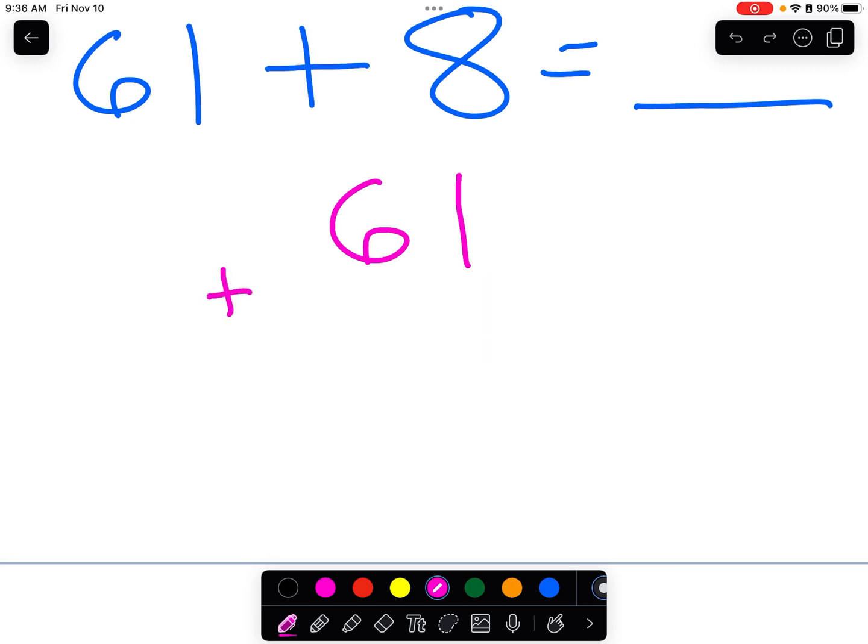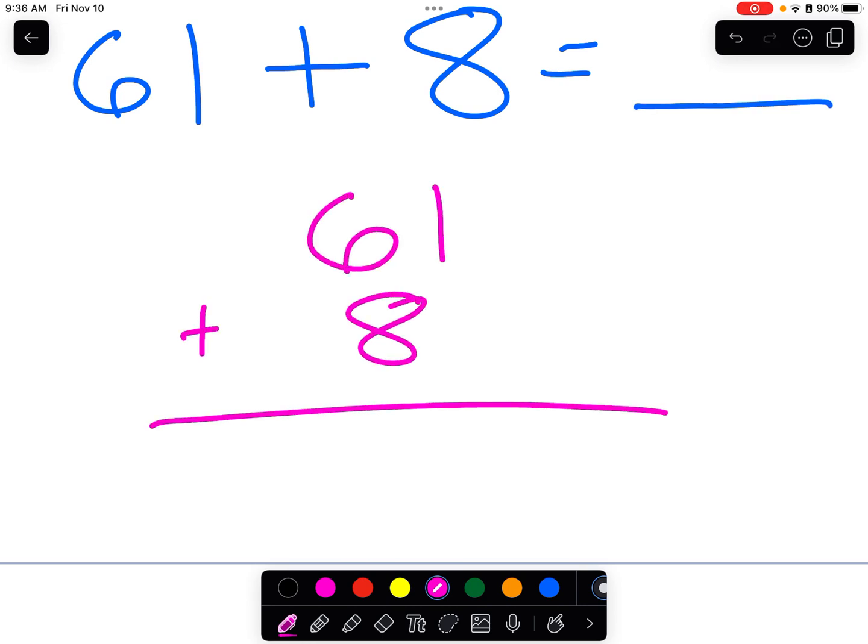61 plus eight. Now, I want to caution you. I want to warn you about something. Sometimes I see kids do this, especially when they're just learning this. They're going to go, oh, 61 plus eight. So, they're going to go like this. They're going to go 61 plus eight. Now, what do we notice here? We notice that the eight is not under the one, even though the eight is in the one's place.